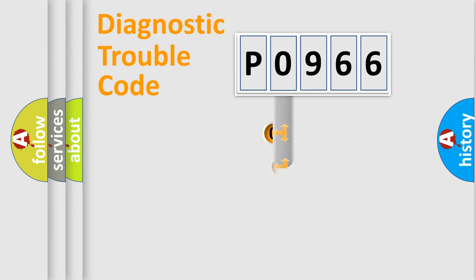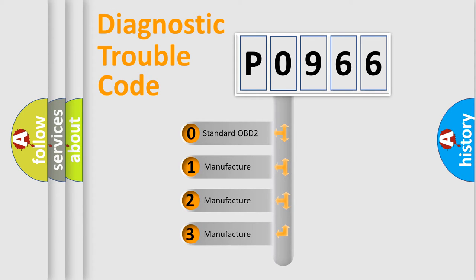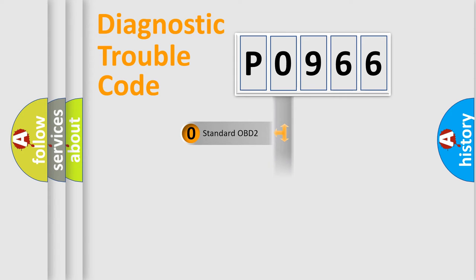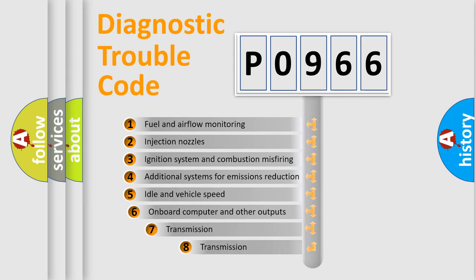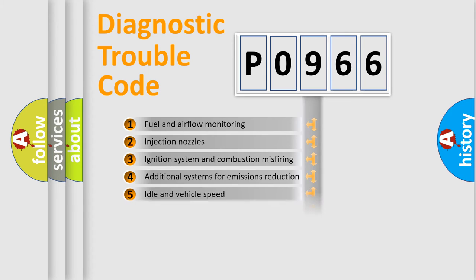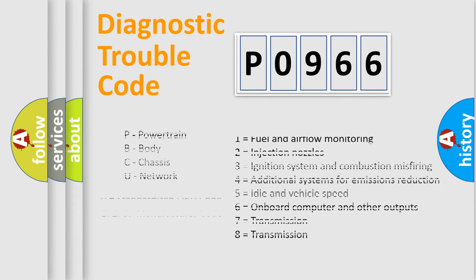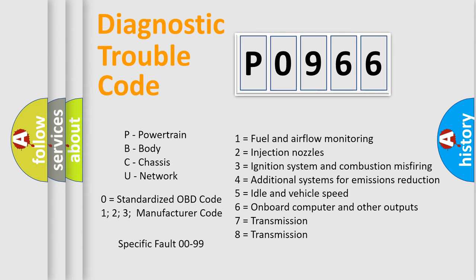This distribution is defined in the first character code. If the second character is expressed as zero, it is a standardized error. In the case of numbers 1, 2, or 3, it is a more specific expression of a car-specific error. The third character specifies a subset of errors. The distribution shown is valid only for the standardized DTC code. Only the last two characters define the specific fault of the group. Let's not forget that such a division is valid only if the second character code is expressed by the number zero.